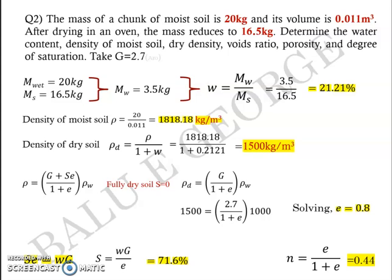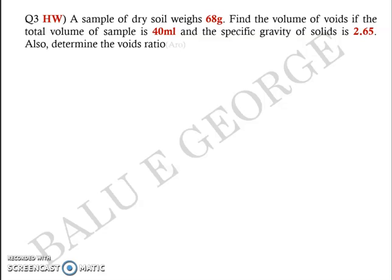Once you have gone through these two questions and are convinced about the solution, try to solve this particular question on your own as homework. A sample of dry soil weighs 68 grams. Find the volume of voids if the total volume of the sample is 40 milliliters, and the specific gravity is 2.65. You are also asked to determine the voids ratio. Based on theory discussed in previous videos, try to solve this on your own, and if you need clarifications, we will discuss during the live session.